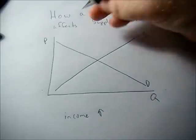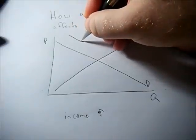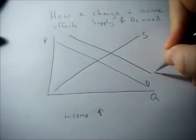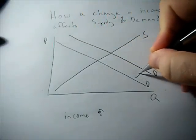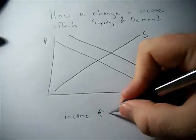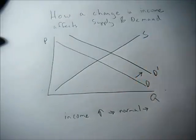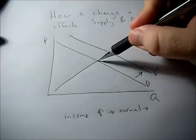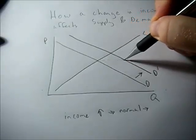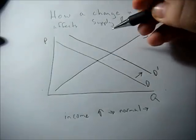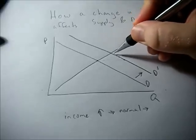Assuming the good is normal, if income goes up, we'll see an increase in demand. The increase in demand will cause a shortage. The price will go up, which means quantity supplied goes up.